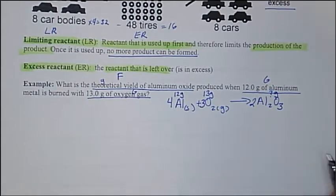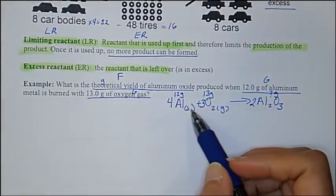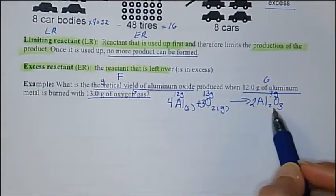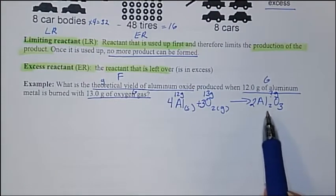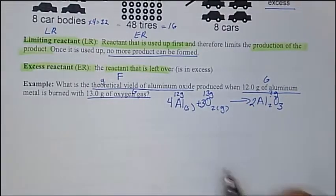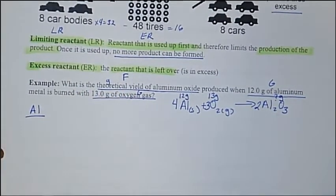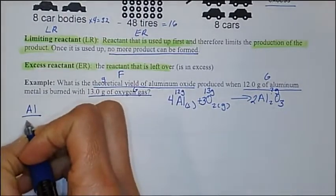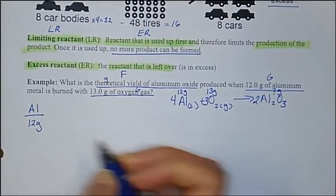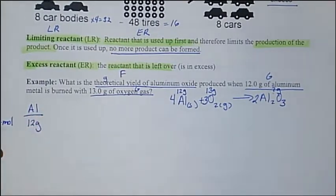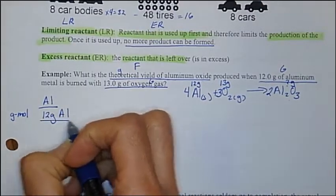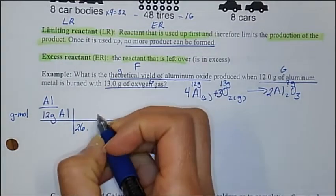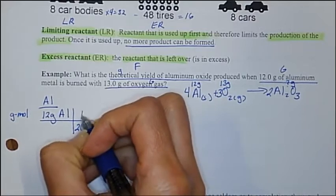Which one of these is going to be the limiting reactant? You can do it two ways. Right now it's apples and oranges trying to figure out how much is going to be produced. You want both of these to be in the same compound so you can compare. I'm going to do aluminum first. We're going to start off with 12 grams of aluminum and convert from grams to moles. Looking at your periodic table, 26.98 grams of aluminum is equal to one mole of aluminum.